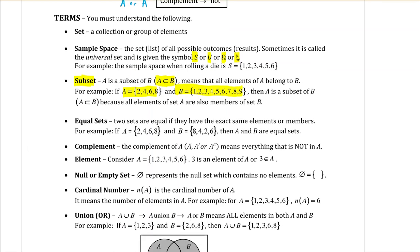Equal sets is just what it sounds like. Two sets are equal if they have the exact same elements or members in both of them. So if A has 2, 4, 6, and 8, and B has 8, 4, 2, and 6, just changing the order around, they are the same elements, so they are equal sets.